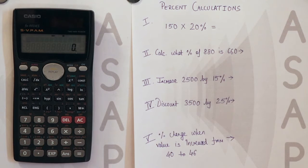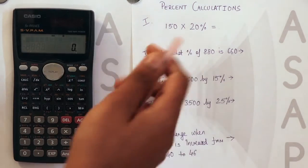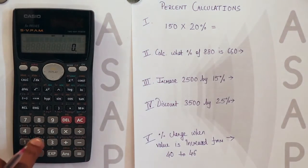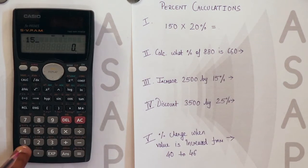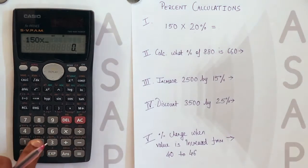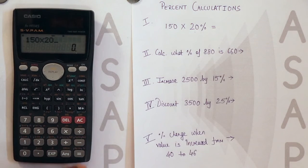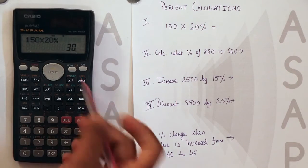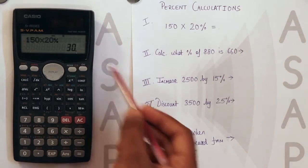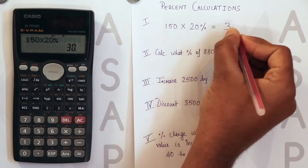The first calculation we're going to see is if you want to calculate 20% of 150. Simple steps: enter 150 into the percentage value we need to calculate, that is 20, then press the shift button and then this equal to where you have the percent sign. You will get the answer 30. So 150 by 20% is 30.